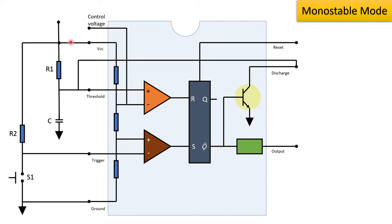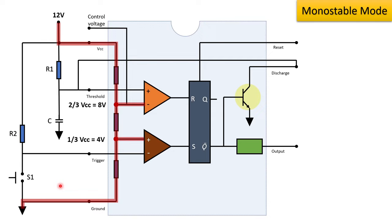Pin 8 is VCC, connected to 12V supply, and pin 1 is ground. This arrangement results in 8V and 4V reference voltages at the threshold and trigger comparator respectively. The inverting terminal of the trigger comparator is connected to the supply through R2 resistor, resulting in 12V at the inverting terminal. So the output of the trigger comparator will be 0.